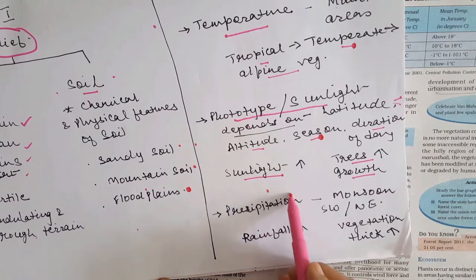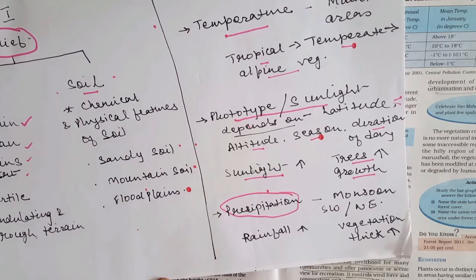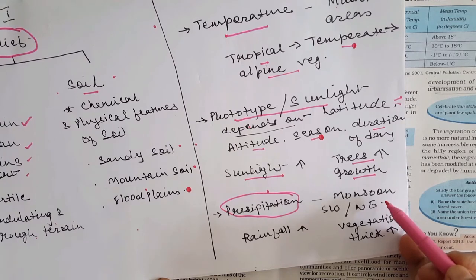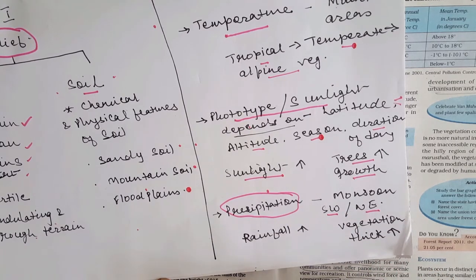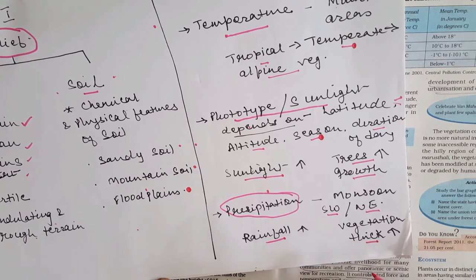The next important factor is precipitation or rainfall. India falls under monsoon climatic conditions, receiving rainfall from the southwest monsoons, and some parts also receive rainfall from the northeast monsoons. Higher rainfall means thicker vegetation. Areas receiving good rainfall will have thicker vegetation, and on the vegetation depends the animal life of that place.